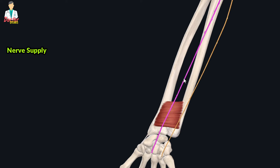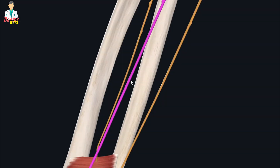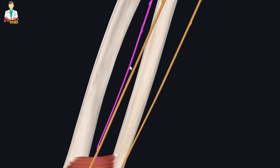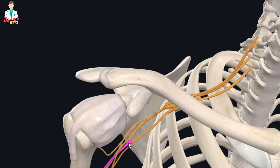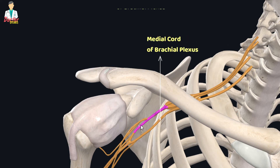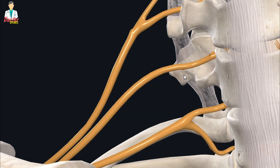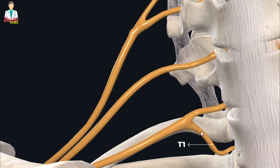In terms of its innervation, the pronator quadratus receives its nerve supply from the median nerve. The median nerve innervates this muscle through a branch called the anterior interosseous nerve of the forearm. The median nerve originates from both the medial and lateral cords of the brachial plexus, with nerve fibers from the C7 and C8 cervical spinal nerve roots, though some anatomy studies also suggest that the T1 thoracic spinal nerve root also contributes.